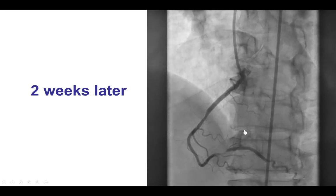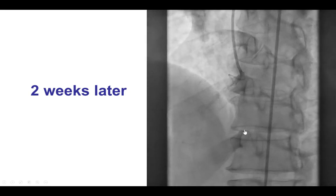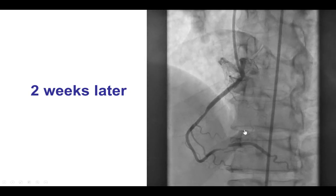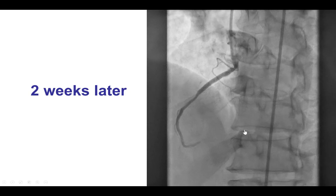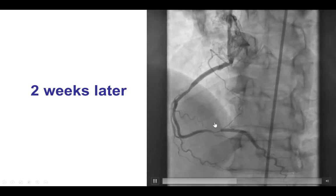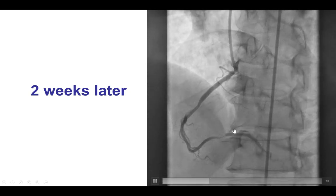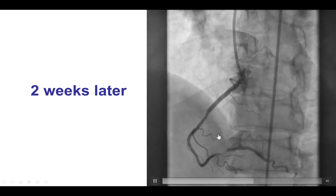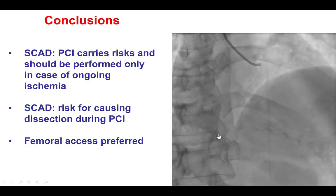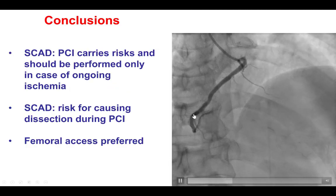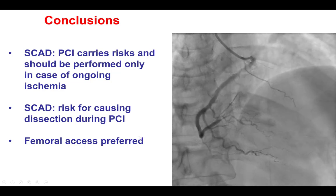The patient did okay; however, she came back two weeks later with recurrent angina. This is the coronary angiogram showing that proximal segment of the artery, which had restenosed. So we ended up placing an additional drug-eluting stent, and that provided a nice result.